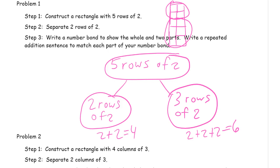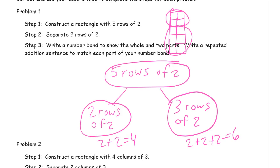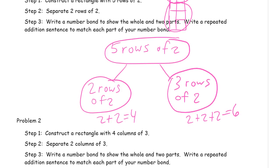Now, it doesn't say we have to do a repeated addition sentence for the whole, just for each part of your number bond. Okay, so those are the parts, and we don't have to write a repeated addition sentence for the whole. So that's everything we need to do.